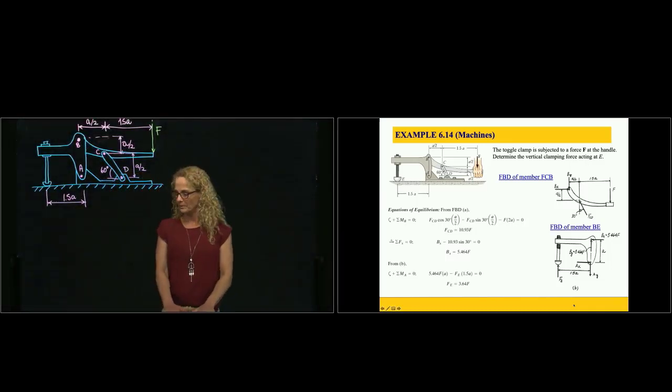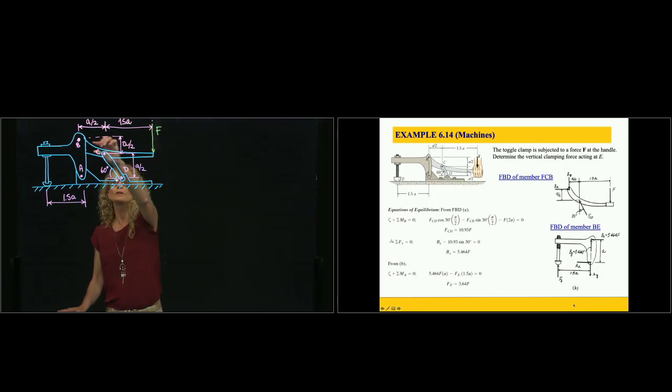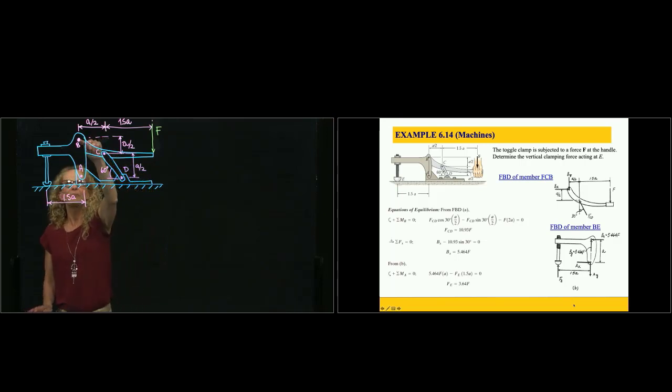Hi, this is problem 6.14, and here we have a machine. The purpose of this machine is that when you apply a force to this handle, it will transmit the force through this mechanism, through this pin, to produce a force against the surface where you need that load to be transferred.